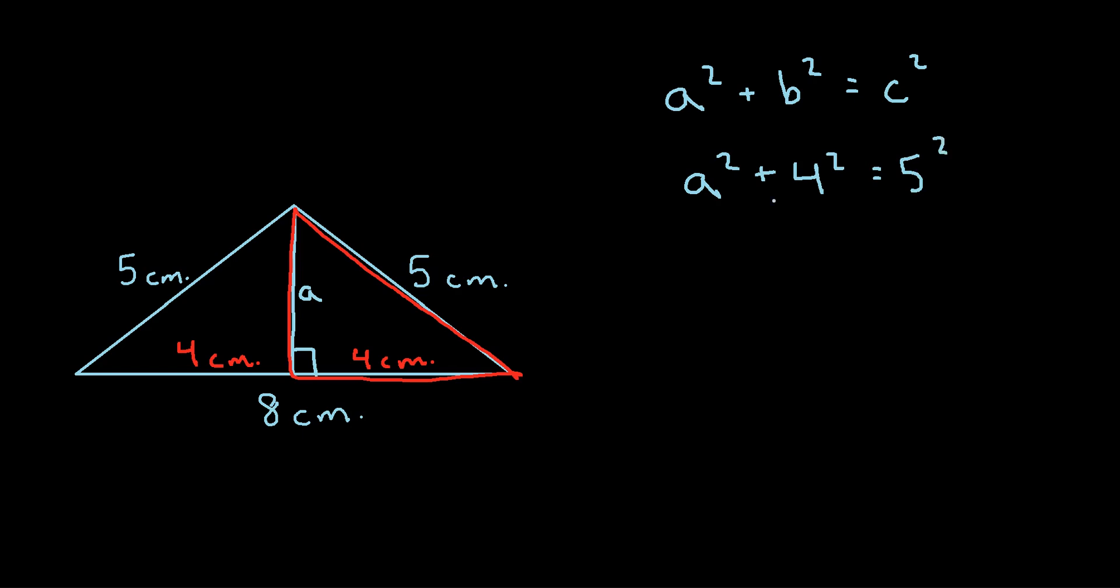Is equal to c squared, where we said c is 5, the hypotenuse, so 5 squared. So we can solve for a, which is going to be the height. So we get a squared plus 4 squared is 16, is equal to 5 squared, that's 25. To solve for a squared, we can subtract 16 from each side. So we get a squared is equal to 25 minus 16 is 9.